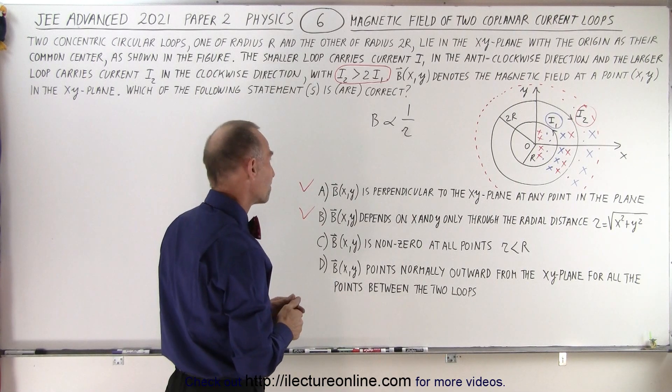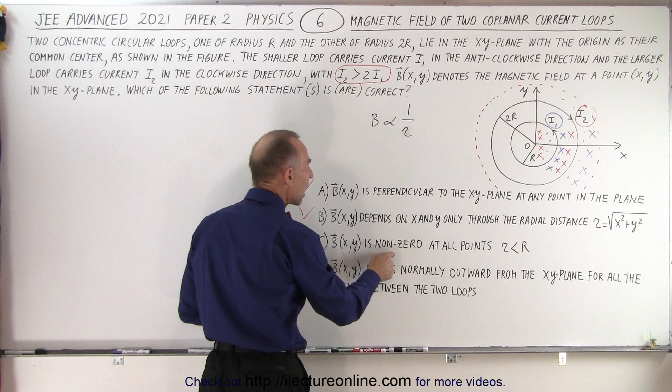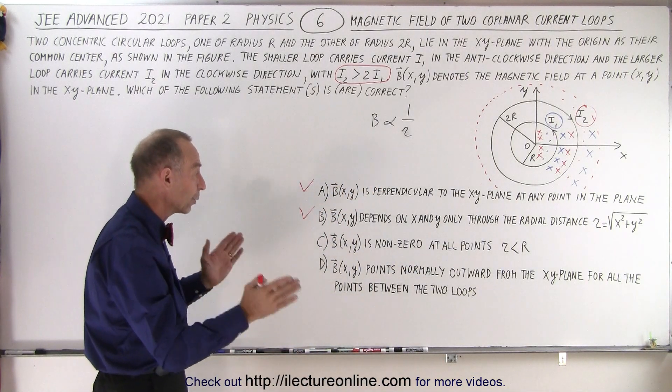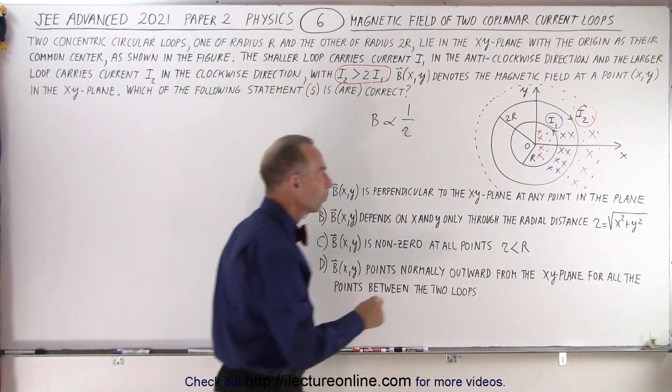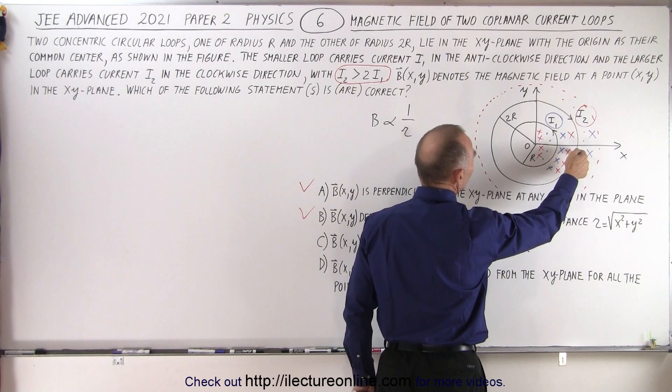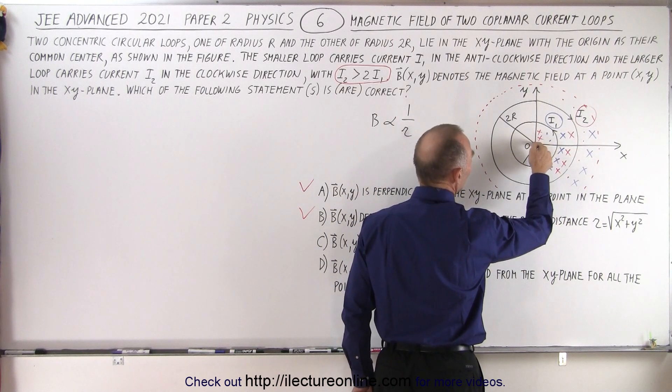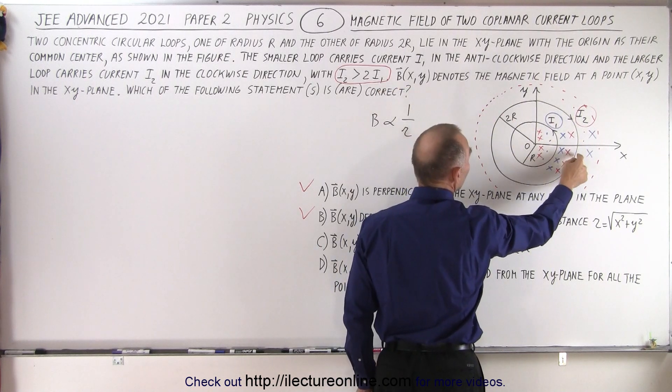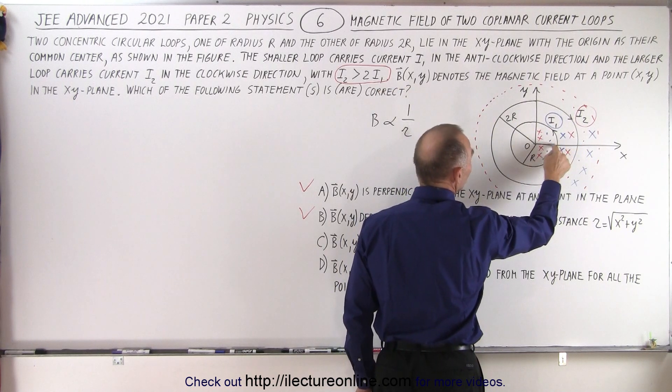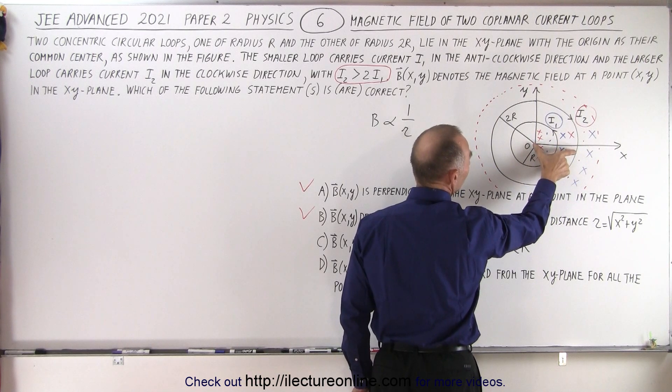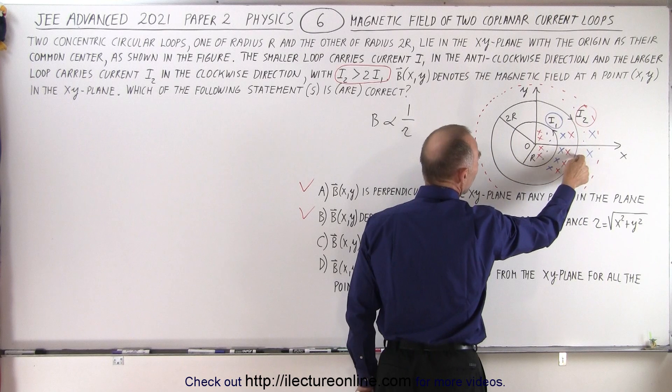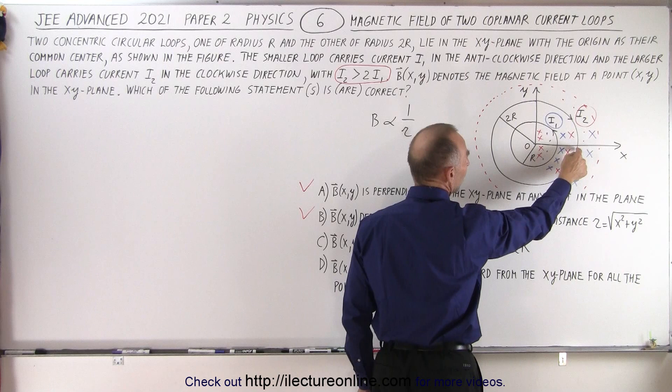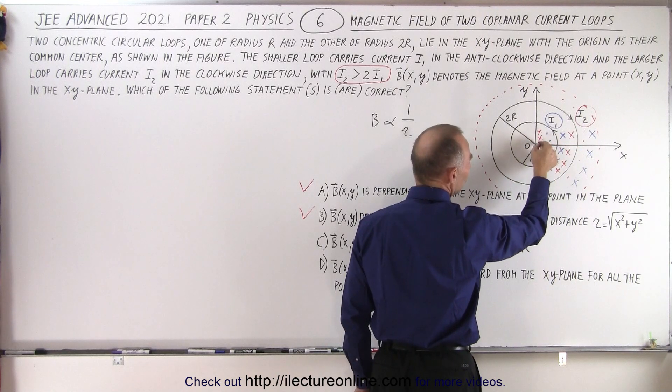So now for C. C says the magnetic field is non-zero at all points r less than r. So we're assuming that there's no way that they will ever cancel each other out. But notice that I2 is twice as far from the origin as I1, and the strength of the magnetic field, or the strength of the current, is more than twice as much as this. So even though we have twice the distance, the strength of the current is more than twice as much as the current of I1, and so there must be a point in here where the two will cancel out.